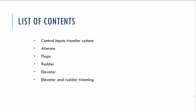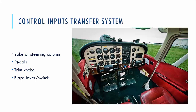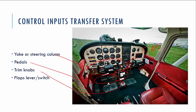This is the list of things we are going to discuss today. We will talk first about how we transfer our control inputs from the cockpit to the mechanisms — to the control surfaces, aerodynamic surfaces like ailerons, flaps, rudder, elevator, and trimmers. So let's start with the idea of how we transfer our control inputs. Movement of the yoke is our main control, allowing us to control the position of the aircraft. Also pedals, trim knob, flap lever, and flap switches all need to transfer inputs to aerodynamic surfaces which control the airplane.